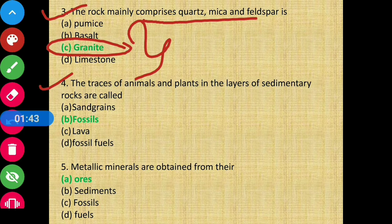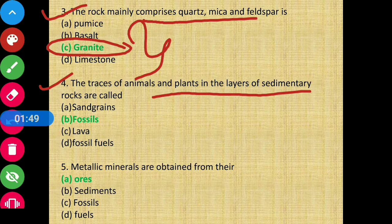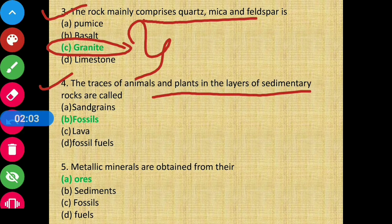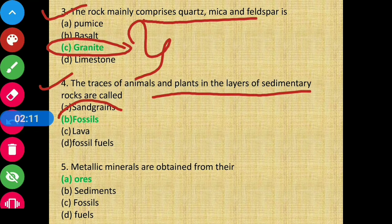Question 4: The traces of animals and plants in the layers of sedimentary rock are called — we know sedimentary rocks form when layers harden and combine together. The animals and plants remaining within those layers — those are called fossils. Option B is the correct answer.